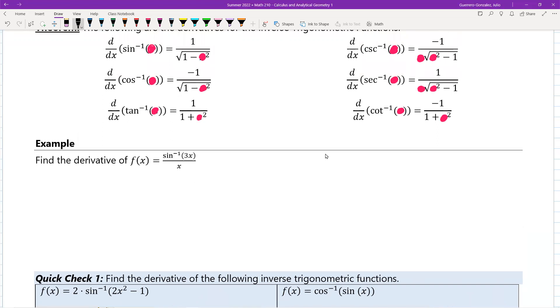Since this is a quotient, we're going to go ahead and start with that. So this is going to be high divided by low. So if my high is sine inverse of 3x.